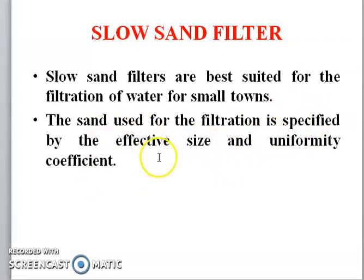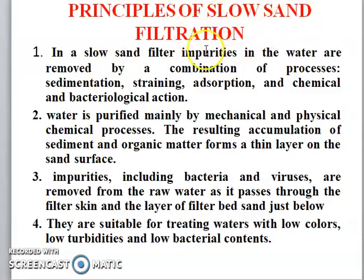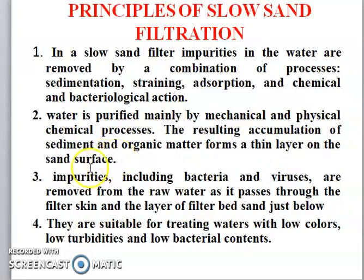The sand used for filtration is characterized by the effective size and uniformity coefficient. In the slow sand filter, impurities in the water are removed by a combination process of sedimentation, straining, absorption, and chemical and bacterial action. Water is purified mainly by mechanical, physical, and chemical processes. The resulting accumulation of sediment and organic matter forms a thin layer on the sand surface. Impurities including bacteria and viruses are removed from the raw water as it passes through the filter skin layer and the filter bed sand just below. They are suitable for treating water with low color, low turbidity, and low bacterial content.